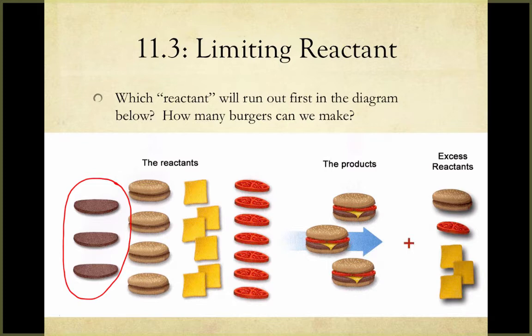Even though we had more buns, cheese, and tomatoes, we couldn't make any more cheeseburgers because our limiting reactant had run out. On the other hand, our excess reactants are buns, cheese, and tomatoes. Notice we had more than enough to go with our three burger patties. Therefore, some will be left over. So again, our burger patties are our limiting reactant, and our burger bun, tomato, and cheese are our excess reactants.